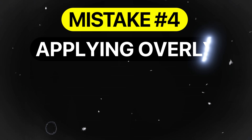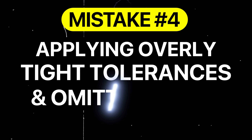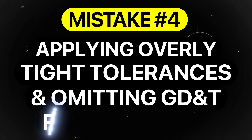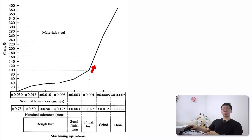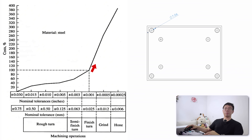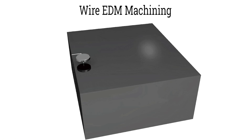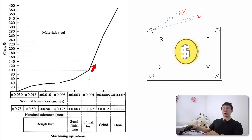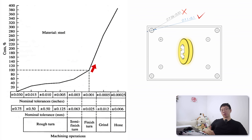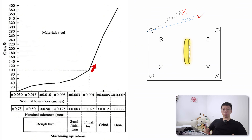Mistake number four is applying unnecessarily tight tolerances and omitting critical GD&T requirements. Over-tolerancing increases manufacturing costs exponentially. For example, dimensioning a boss diameter to ±0.01mm when ±0.1mm suffices requires precision grinding or EDM, which increases part costs by tenfold. Always assign tolerances based on functional requirements, supplier capabilities, data, and cost-performance trade-offs.